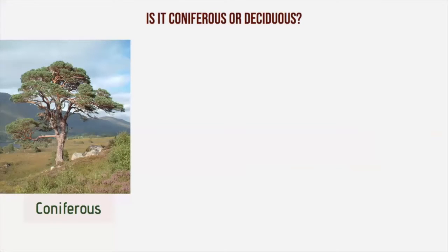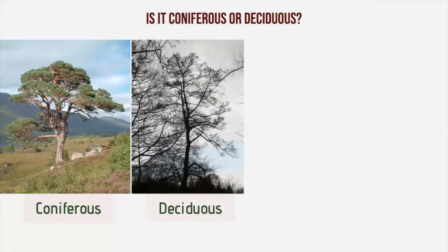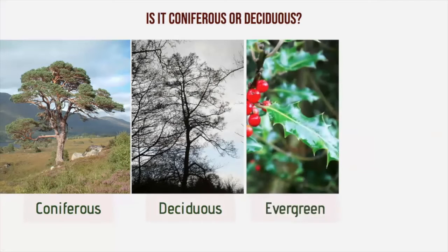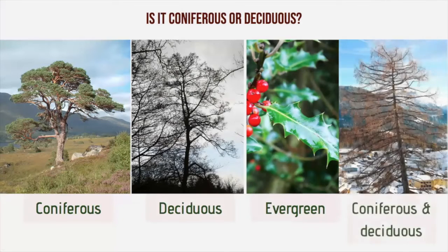One question I'm often asked is: is it deciduous or coniferous? Trees are often considered as being one or the other, but the two aren't opposites. Coniferous means they bear cones, and deciduous means the tree sheds its leaves in the autumn. So the opposite to deciduous is evergreen, such as the holly. Most conifers are evergreen, but there are a few exceptions, such as the larch, which is both coniferous and deciduous.